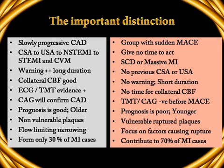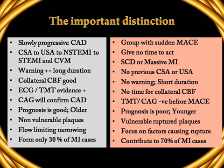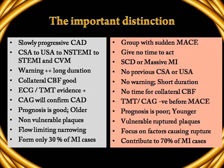Let us make a clear distinction between the two important types of presentation of coronary artery disease. One group of patients presents with slowly progressive coronary artery disease — they have anginal pain, chronic stable angina, unstable angina, NSTEMI, going on to STEMI and cardiovascular mortality and morbidity. They have enough warning signs and symptoms, a duration of illness over decades. There is enough time for coronary blood flow collaterals to be established, evidence of ECG and TMT ischemic heart disease, and coronary angiogram will confirm the disease. Prognosis in these patients is very good. Usually they are of older age groups; the plaques in their coronaries are non-vulnerable plaques. It is the flow-limiting narrowing of the coronaries that causes the symptoms.